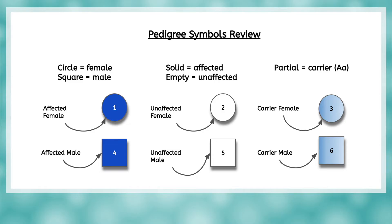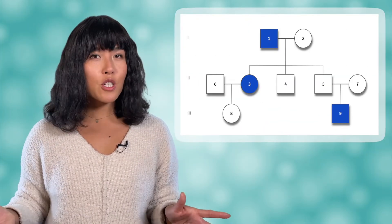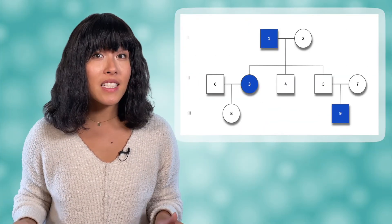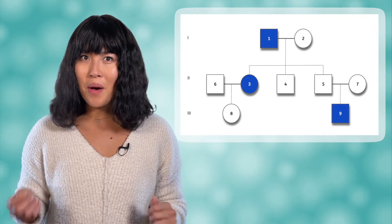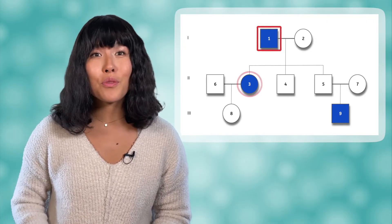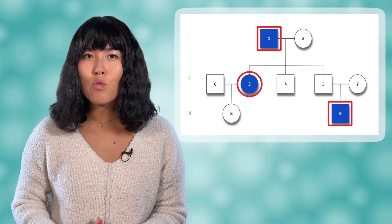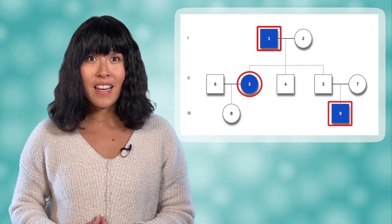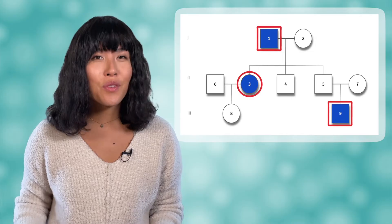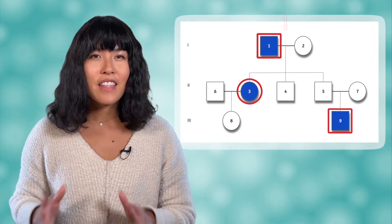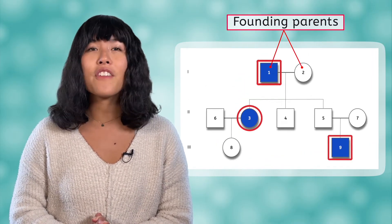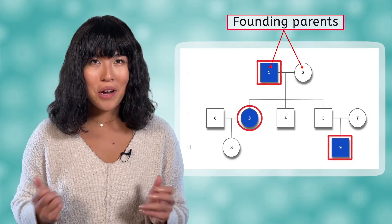Carriers are heterozygous and carry a recessive allele, though they don't show the recessive trait. Often the symbols are numbered, just so we can easily identify individuals. On this pedigree, the affected individuals — those who have the trait — are male number one, female number three, and male number nine. Notice the Roman numerals on the left, which identify each generation. The first generation on the pedigree is often called the founding parents.